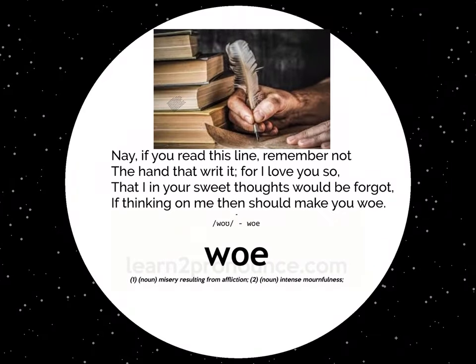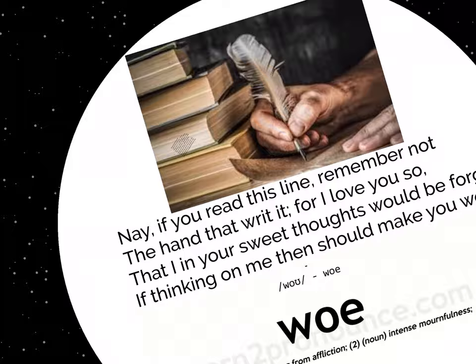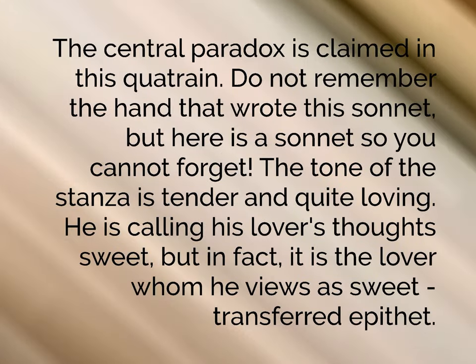In the second quatrain: 'Nay, if you read this line, remember not the hand that writ it. For I love you so, that I in your sweet thoughts would be forgot, if thinking on me then should make you woe.' To feel woe is to feel misery from affliction or intense mournfulness. This is where the central paradox is contained — he's saying do not remember the hand that wrote the sonnet, but here is a sonnet, so you cannot forget. The tone of this stanza is tender and quite loving. He calls his lover's thoughts sweet, but in fact it is the lover whom he views as sweet — another example of a possible transferred epithet.